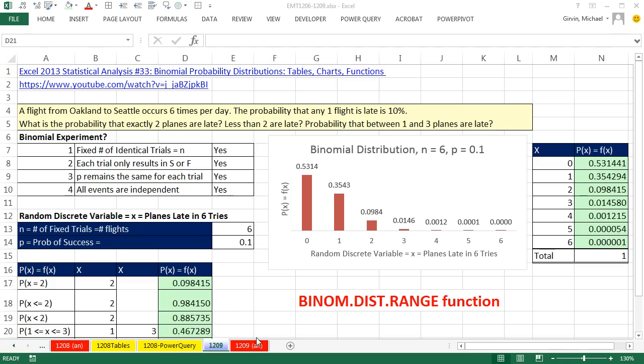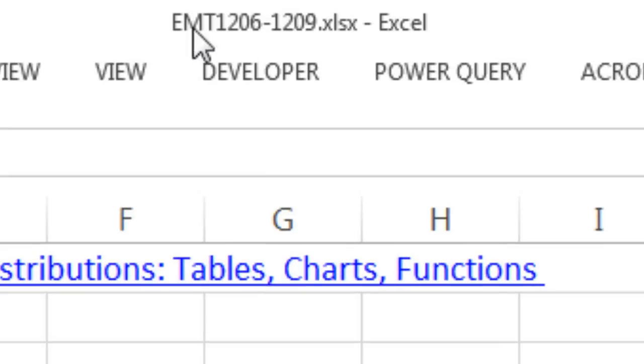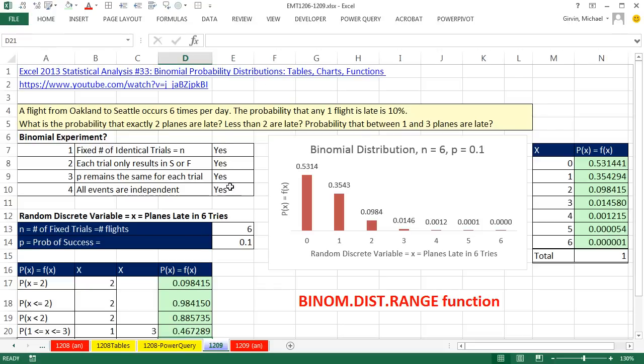Welcome to Excel Magic Trick number 1209. If you want to download this workbook 1206 to 1209 and follow along, click on the link below the video. In this video, we've got to talk about this amazing function, binom.dist.range.